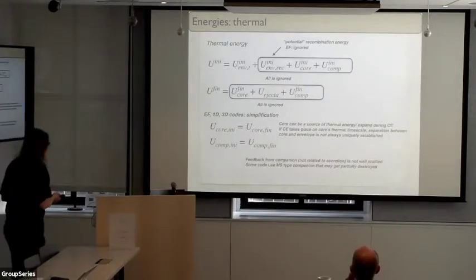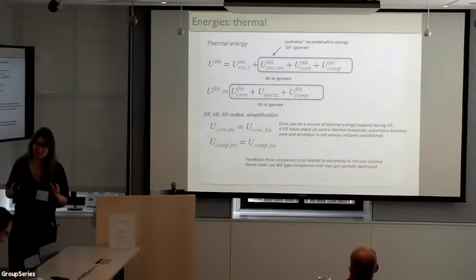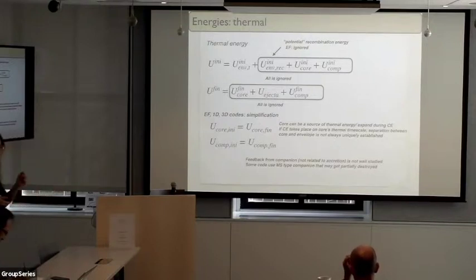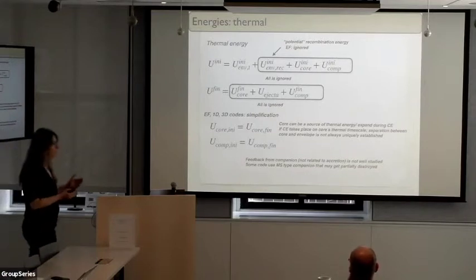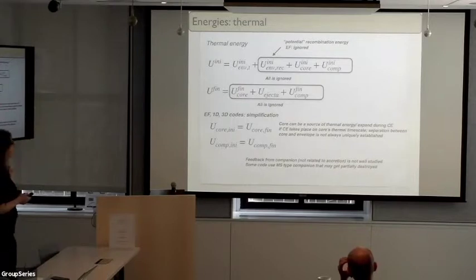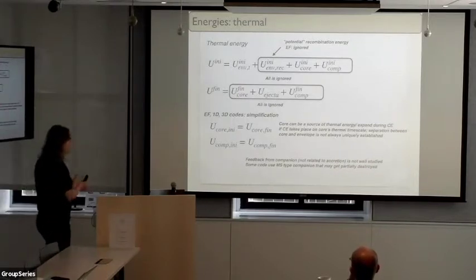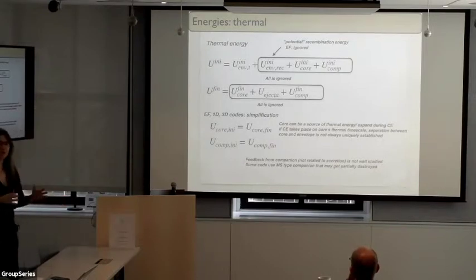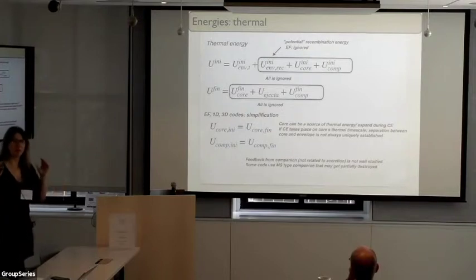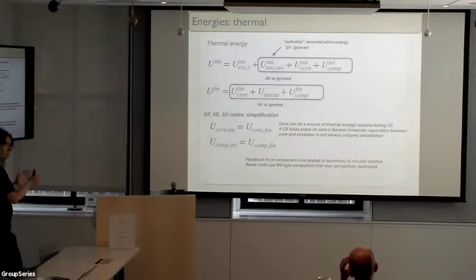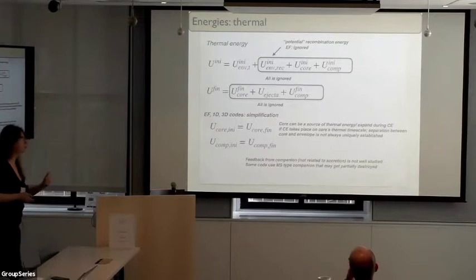Thermal energy is another problem. The internal energy of the initial system consists of several components: thermal energy from microscopic kinetic motions of molecules, plus recombination energy. This is the energy from recombination which we cannot forget — when hot plasma recombines, it releases energy. It's potential until triggered. There is also internal energy of the core of the star and the companion. The usual simplification is that these energies are the same at the start and the end — but they are not the same. If you have a common envelope with a main-sequence star and a giant with a non-degenerate core, an energy flow from one to another is not guaranteed.